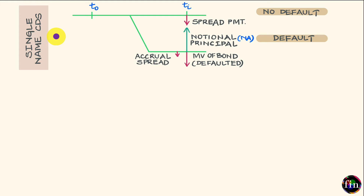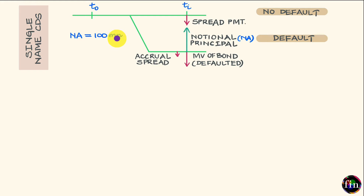The size of this CDS, also referred to as the notional amount or notional principal, will be equal to the face value of the bonds being insured. In this case, the notional amount is equal to $100 million. For the CDS, you also need to decide upon the horizon for which protection is being bought. If this horizon is 5 years, the maturity of this CDS will also be 5 years.